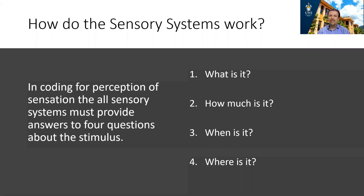In thinking about and understanding sensory systems, we can say that sensory systems want to answer four questions. The sensory system wants to answer: what is it? It also wants to answer: how much is it? It wants to answer: where is it? And finally, it wants to answer: when is it? We're going to go through each one of these and discuss how the brain goes about answering these questions.